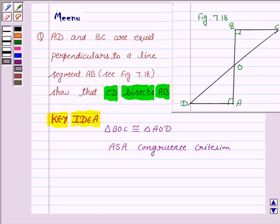Now we are given AD is perpendicular to AB, and BC is perpendicular to AB. Also BC is equal to AD.